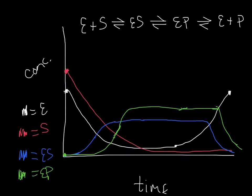Last but not least, we have product. Its concentration starts at zero, it's the longest one to build up due to the sequential lags, and then eventually it ends up somewhere — maybe higher or lower than the intermediate concentrations.